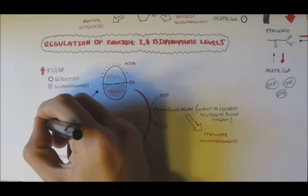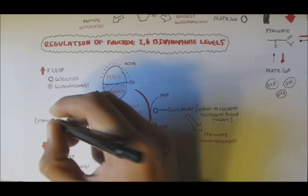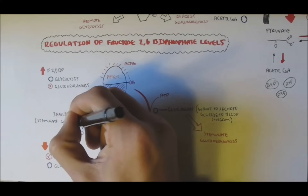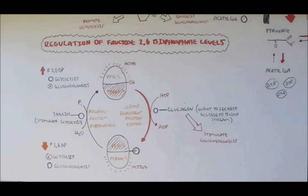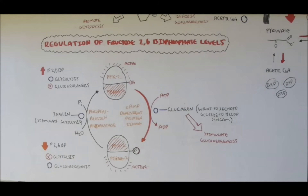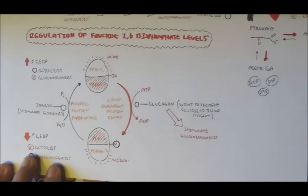So phosphofructokinase 2 can be active again and fructose bisphosphatase 2 will be inactive again, bringing fructose 2,6-bisphosphate levels back up. The hormone insulin will stimulate phosphoprotein phosphatase because insulin increases the activity of glycolysis.